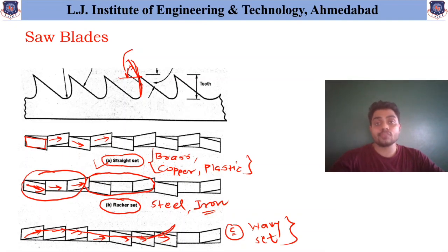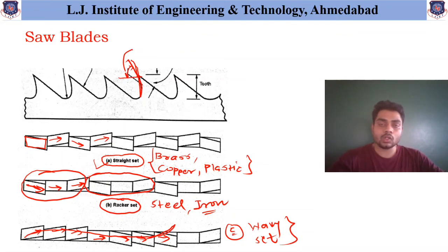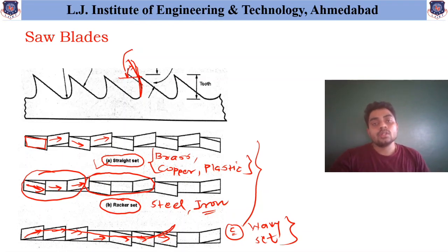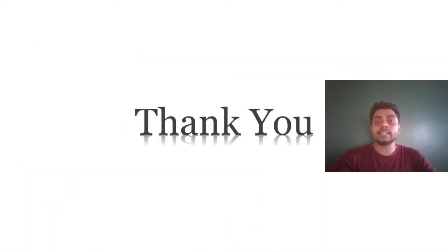The last arrangement: if the teeth are first set in the upward direction, then straight direction, then downward direction, it forms a wave form — and that's why this last arrangement is called the wavy set. This wavy set is helpful to remove material from different types of hollow tubes and different sheets of metal during cutting operations. Based on the requirement, a straight set, raker set, or wavy set type teeth are used depending on whether it is a reciprocating type machine, a circular saw machine, or a band saw machine. I hope you have got clarity about different types of sawing machines, saw blades, and different types of sets available and their application during machining operations. Looking forward to seeing you all in our next lecture — thank you.